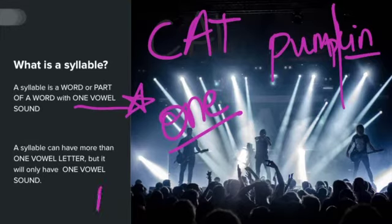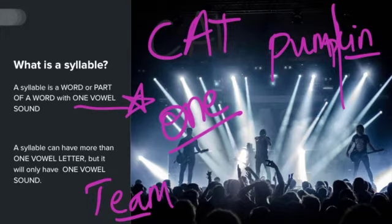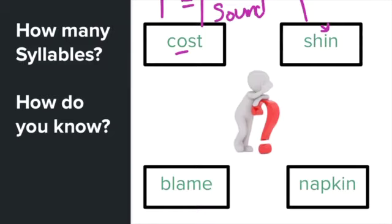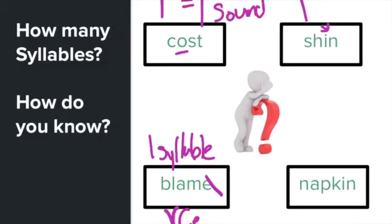A syllable can have more than one vowel letter, like in the word 'team' — you see two vowels, but there's only one vowel sound. Let's look at some examples. 'Cost' is a one syllable word because it has one vowel sound. 'Shin' is a one syllable word because you hear that short I sound. 'Blame' — I see two vowels but it's still one syllable because you only hear one vowel sound; that E is silent. This is a VCE syllable — we'll learn about that next week.